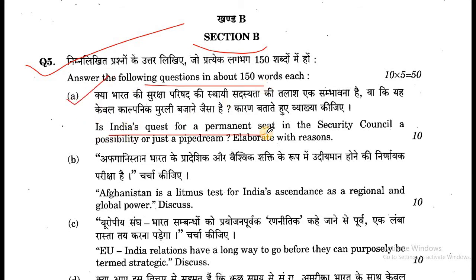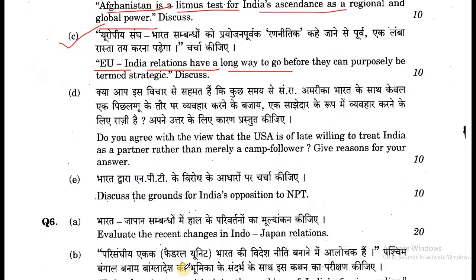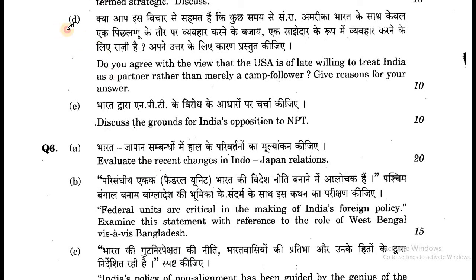Section B. Question number 5: Answer the following questions in about 150 words each. (a) India's quest for a permanent seat in the Security Council — a possibility or just a pipe dream? Elaborate with reasons. (b) Afghanistan is a litmus test for India's existence as a regional and global power. Discuss. (c) EU and India's relations have a long way to go before they can purposefully be termed strategic. Discuss. (d) Do you agree with the view that the USA is of late willing to treat India as a partner rather than merely a camp follower? Give reasons for your answer. (e) Discuss the grounds for India's opposition to the NPT.